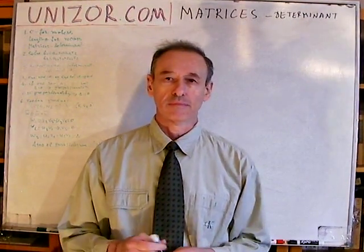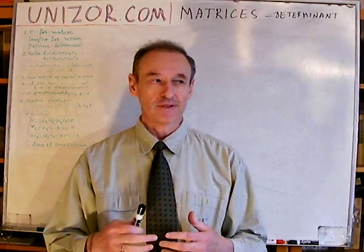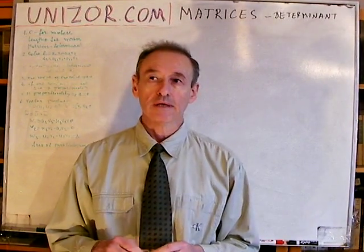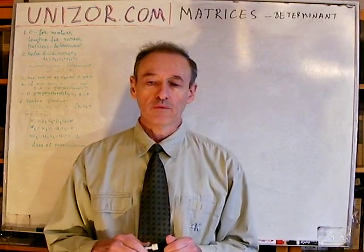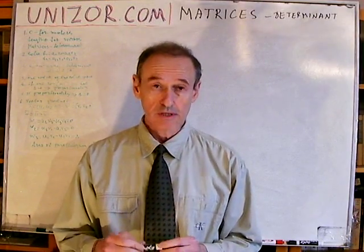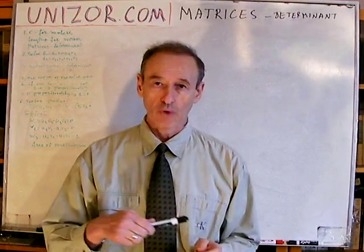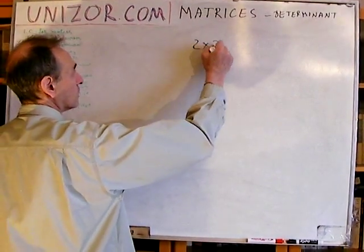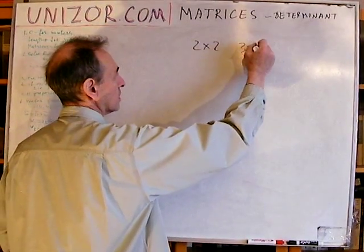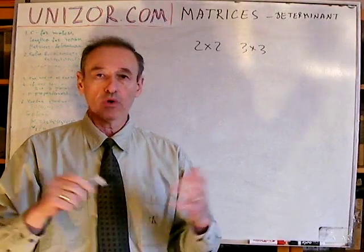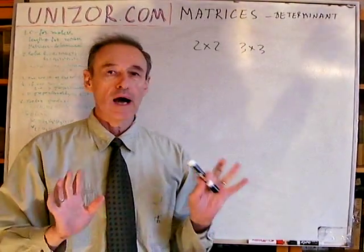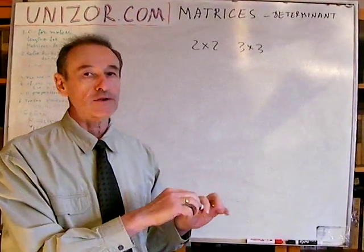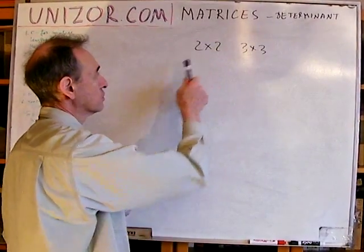The word determinant is related to the word 'determine' — it determines the quality of the matrix. Another important thing: we will mostly be talking about square matrices, which have the same number of rows and columns — either 2x2 or 3x3. This particular lecture is about the determinant of 2x2 matrices.